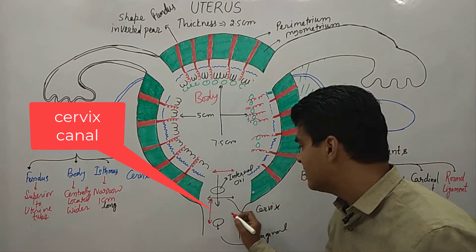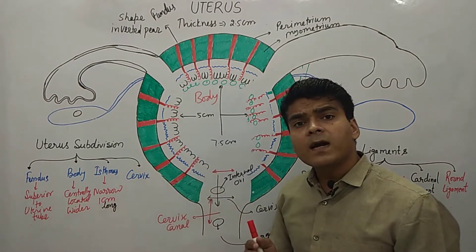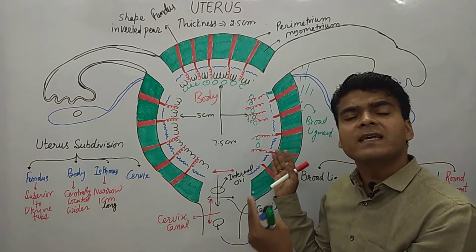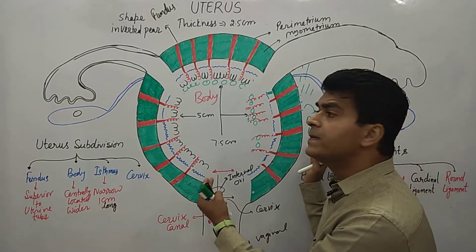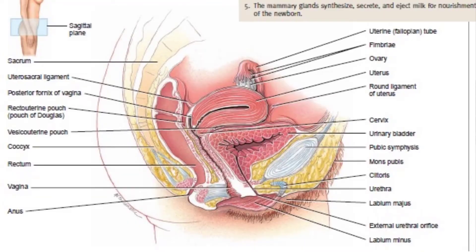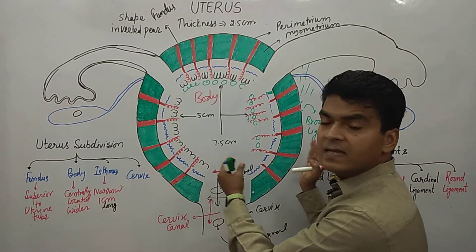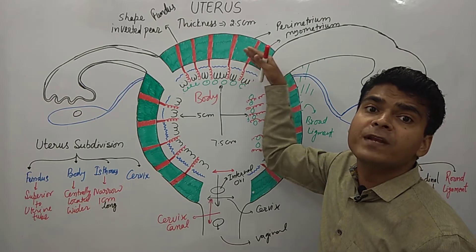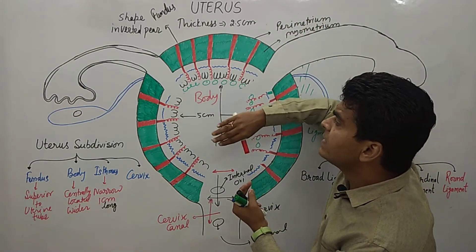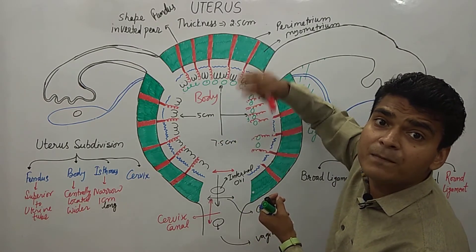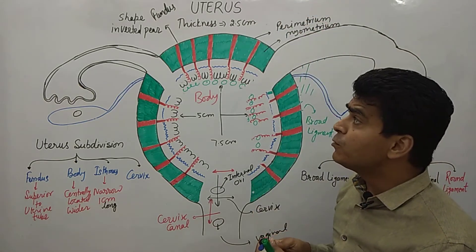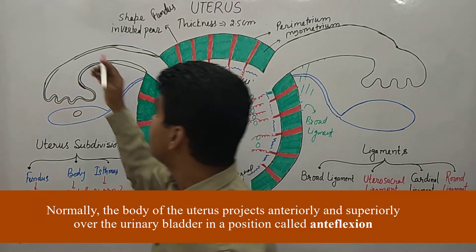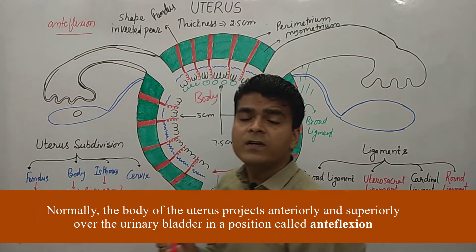The position of the uterus is between the urinary bladder and the rectum. You can see clearly in the diagram: on one side is the urinary bladder, and on the other side is the rectum. The body of the uterus projects superiorly over the urinary bladder. This position is known as the anteflexion position of the uterus — anteflexion means 'before' or 'forward.'